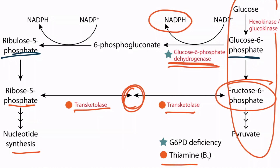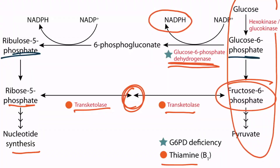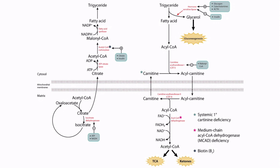NADPH has three major functions. Let's discuss reductive synthesis first. This is a figure from the section on fatty acid metabolism. Notice that NADPH is required for the conversion of malonyl-CoA to fatty acids. Therefore, patients with a G6PD deficiency may be unable to properly synthesize fat.